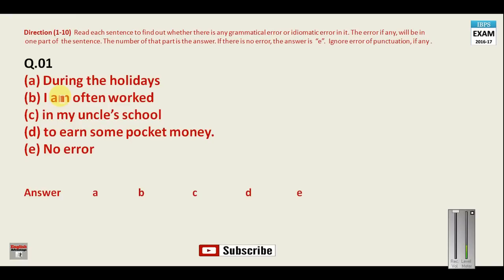Before I proceed, let me remind you to take a pen and paper and first try to figure out the answers on your own. Then compare your answers with mine. If your answer is correct, give yourself one mark; if wrong, minus 0.25; if unattempted, zero marks. After the video, add up all your marks and send me your final score through the comment box.